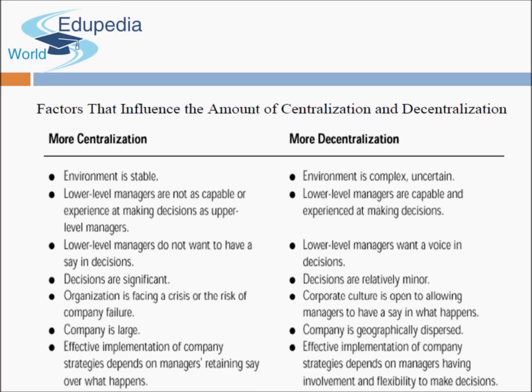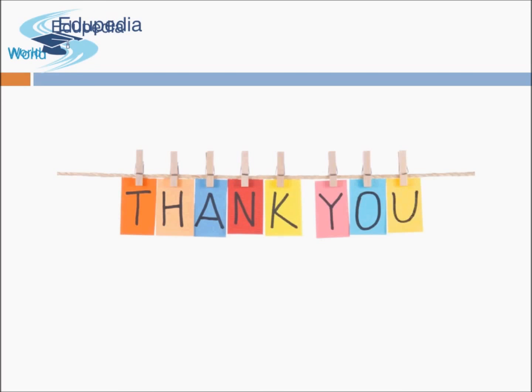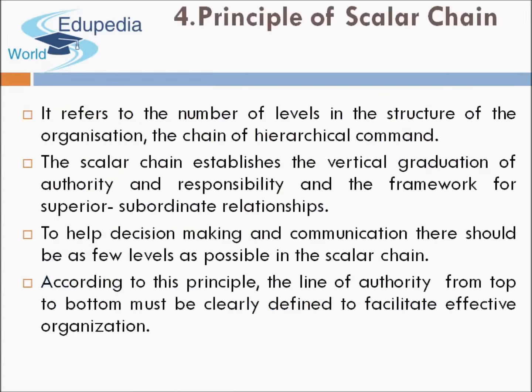More decentralization is preferred when the environment is complex and uncertain — because top management cannot make every decision in rapidly changing environments — when lower-level managers are capable and want to make decisions, decisions are not crucial, the corporate culture is open to managerial input, or the company is geographically dispersed, meaning area-specific heads take decisions for their regions.